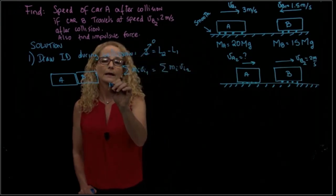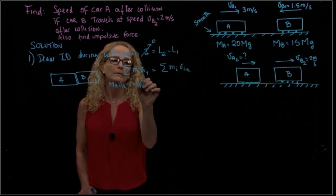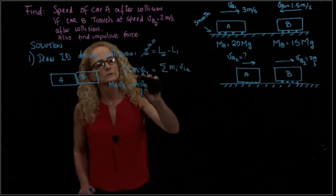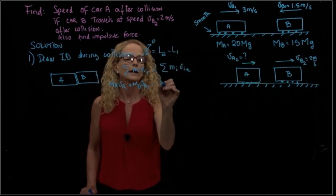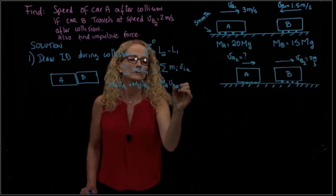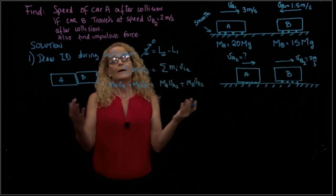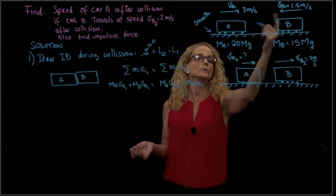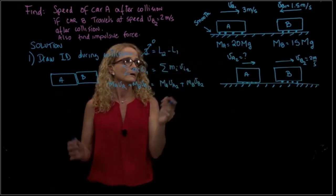So mass A times velocity A initial plus mass B times velocity B initial equals mass A times velocity A final plus mass B times velocity B final. From that equation, the only unknown is the final velocity of A, because I have the two initial velocities and the final velocity of B, so it's straightforward.